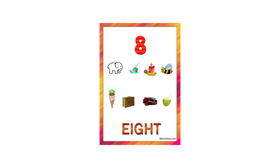1, 2, 3, 4, 5, 6, 7, 8. So we have here 8 objects. You can count using your fingers. When we count using our fingers, we will have 5 on one hand and 3 on the other hand. And this makes 8.